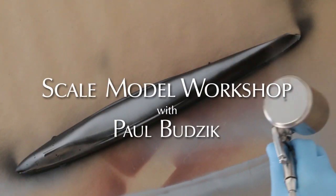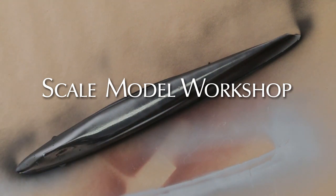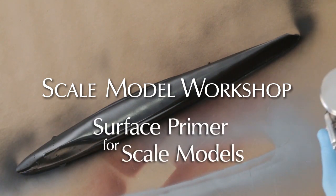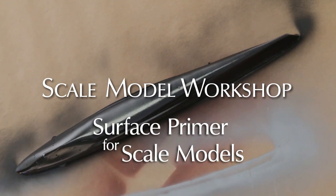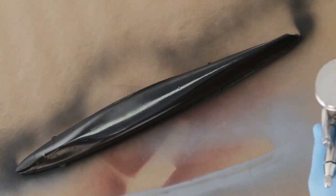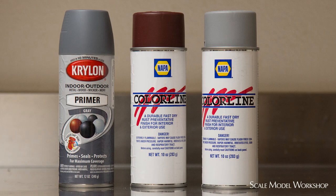Because the final finish of a model can only be as smooth as what is underneath, proper primer coat is essential. So many modelers seem to struggle to achieve a smooth coat of primer with an airbrush, and many just give up and turn to an aerosol can.